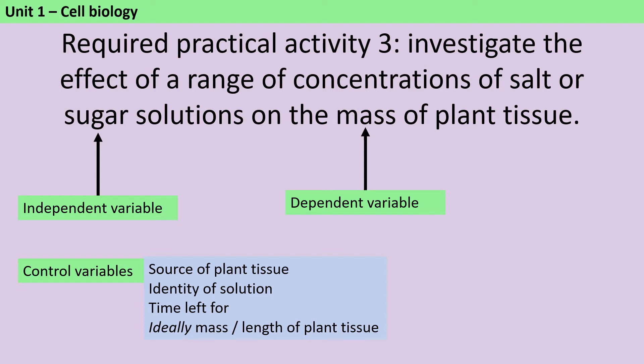And then finally, in an ideal world, I would want to start with identical pieces of plant tissue. But the reality is this is quite hard to achieve. So although I'm aiming for exactly the same starting mass, this isn't truly a control variable because I'm not actually going to force it to be identical, and instead I'm going to use a little bit of maths to get around this later.